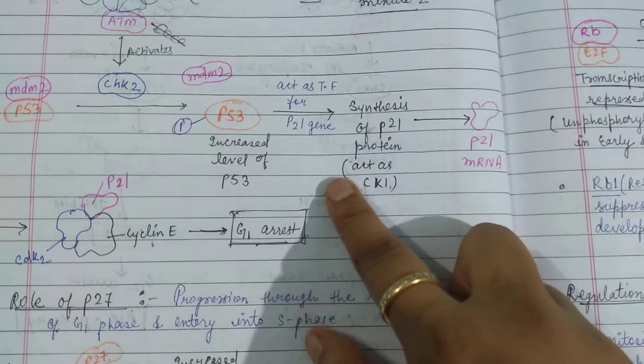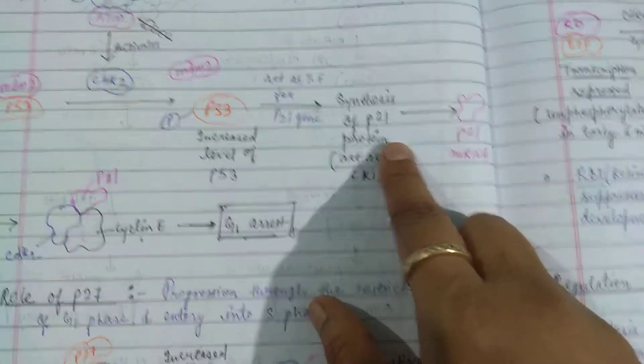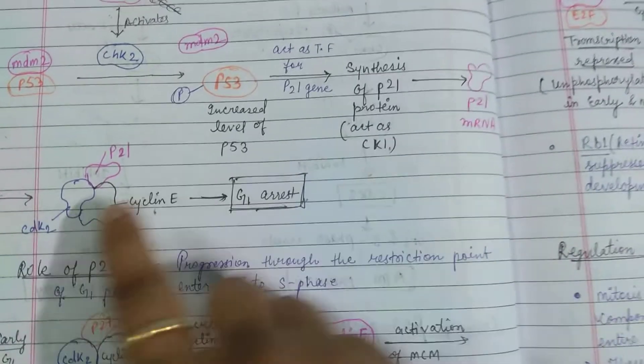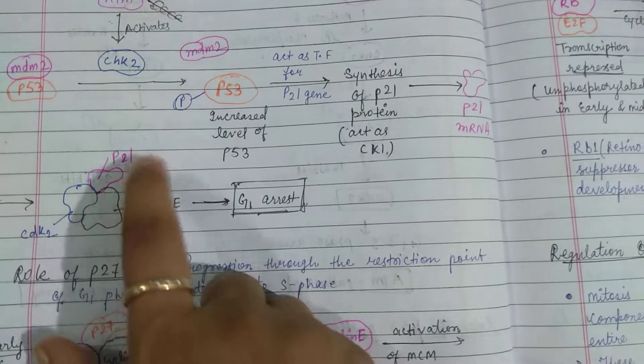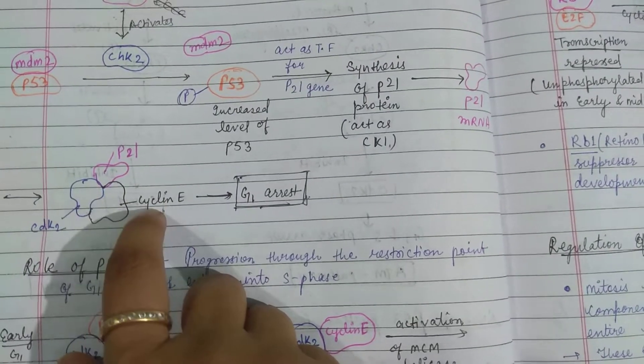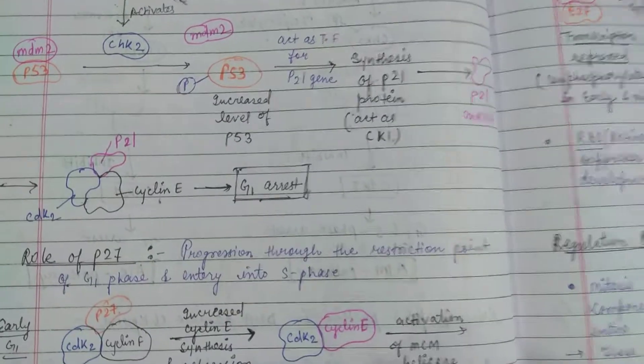then it activates the P21 gene which acts like a transcription factor. Then P21 mRNA synthesis occurs, which blocks cyclin and CDK1, and then G1 arrest happens. Because we know that CDK and cyclin are responsible for mitosis and MPF is responsible.